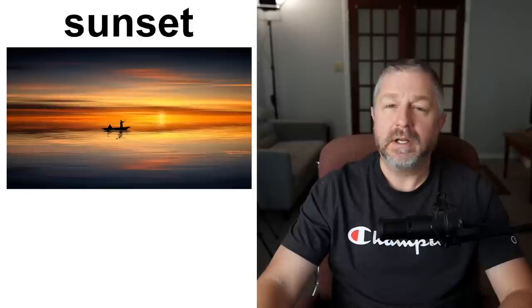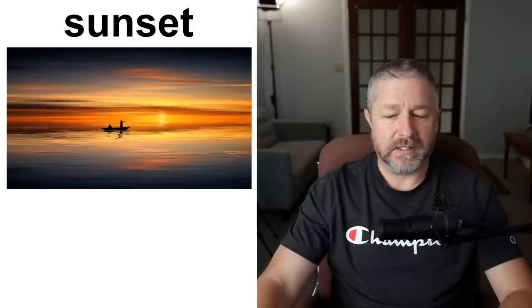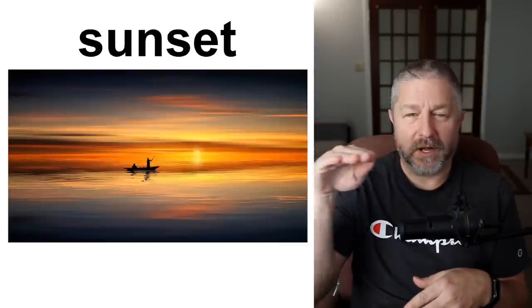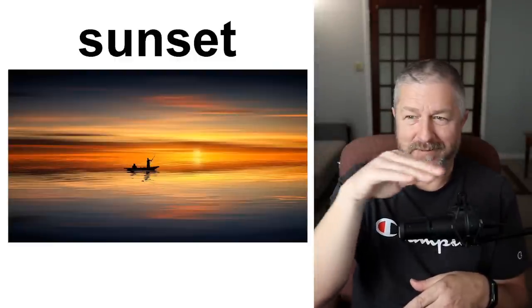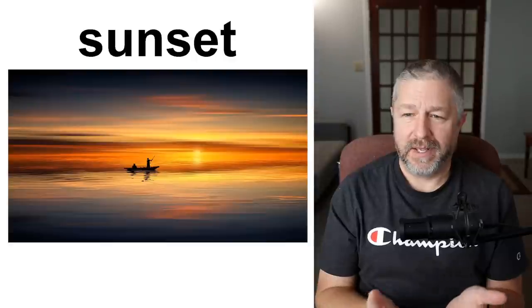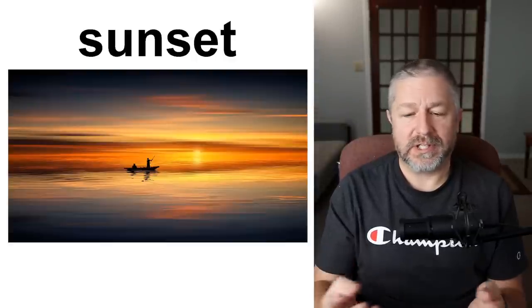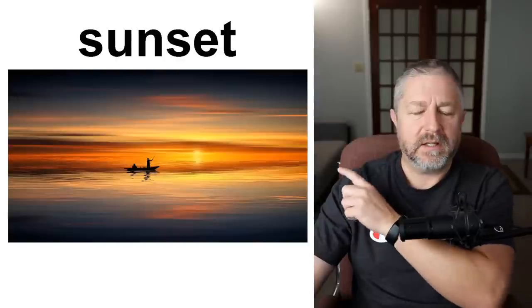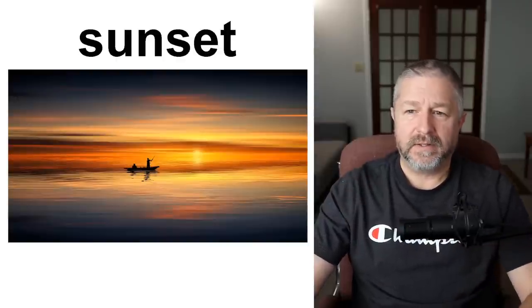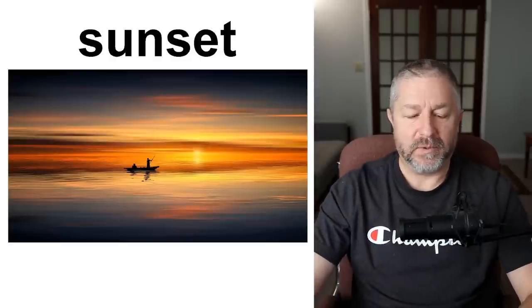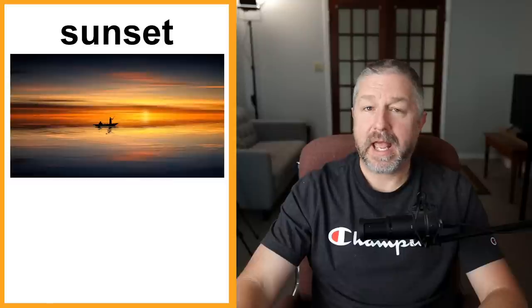Sunset. Night time begins usually with the sun going down. In the morning we have the sunrise; at night we have the sunset. When the sun sets on the horizon — where things disappear behind — this is sunset. It is a beautiful time of day; the color of the sunlight is gorgeous at that time. After the sun goes down, evening begins. The sun sets just before what we call dusk, which I'll talk about in a second. Sunset marks the end of the day.